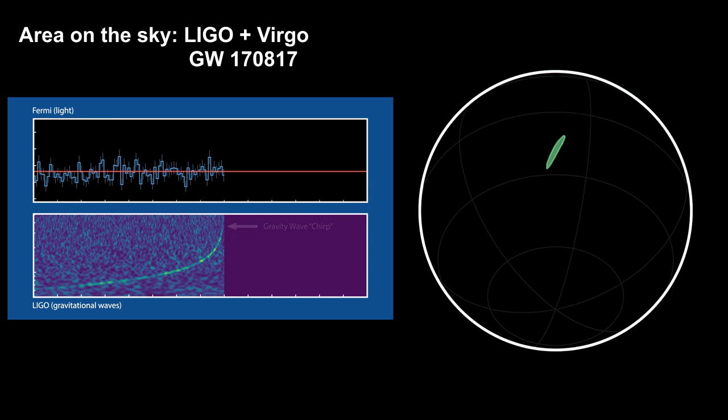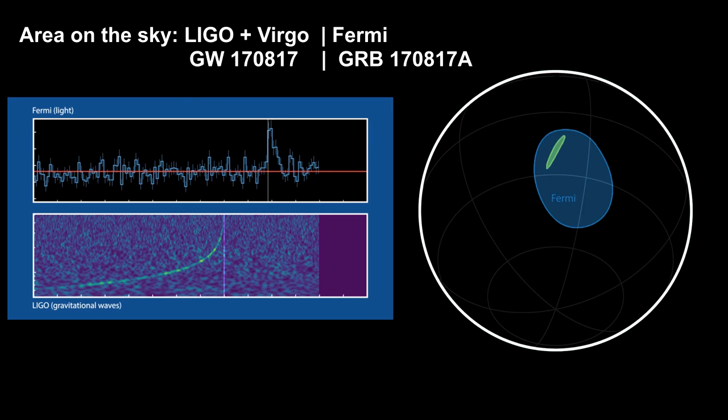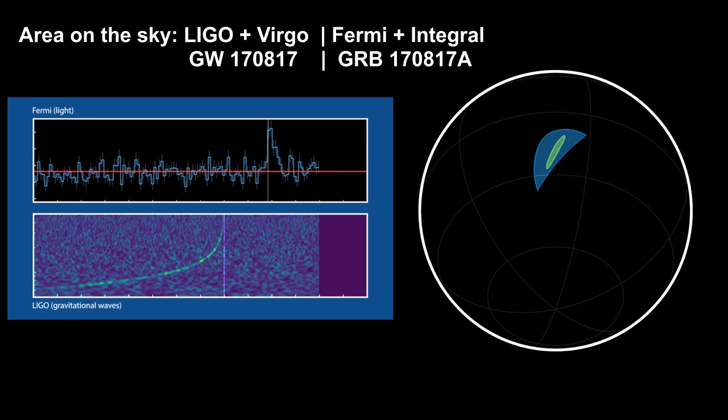1.7 seconds after LIGO triggered, the Fermi gamma-ray burst detector registered gamma-ray burst GRB-170817A, in an area of the sky that overlaps the area identified by LIGO and Virgo. Simultaneous detection by ESA's Integral satellite helped narrow down the gamma-ray source's possible area of the sky that was completely consistent with the gravitational wave's origin.